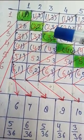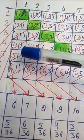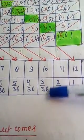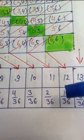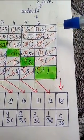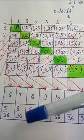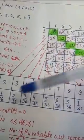In the given table, we write: sum is 6 gives 5 upon 36, sum is 7 gives 6 upon 36, sum is 8 gives 5 upon 36, sum is 9 gives 4 upon 36, sum is 10 gives 3 upon 36, sum is 11 gives 2 upon 36, and sum is 12 gives 1 upon 36. If the sum is 13, there are no possible outcomes, so probability is 0 upon 36.